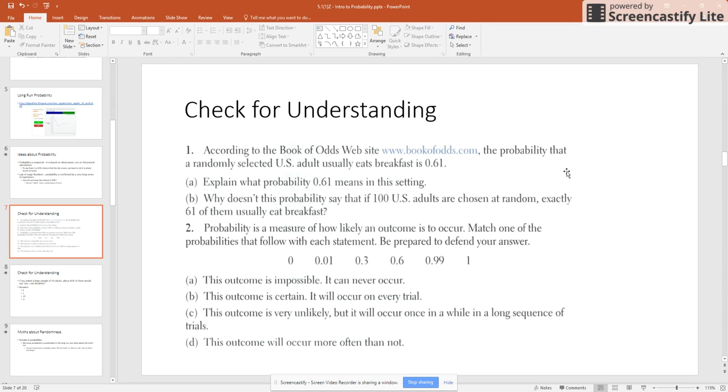A part two there then, probability is a measure of how likely an outcome is to occur. Match one of the probabilities that follow each statement. Be prepared to defend your answer. So part A there tells me that the outcome is impossible. It can never occur. Well, if the outcome is impossible and can never occur, that means it's zero times going to happen. So zero would be my best probability for that one there.